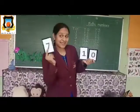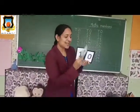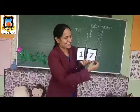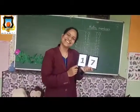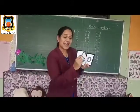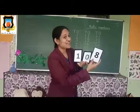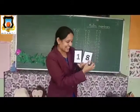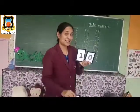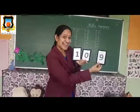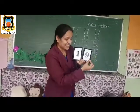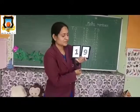Now next — 6 ki baad kya aata hai? 7. So 10 and 7, 17. Say everyone: 10 and 7, 17. Very nice. Now 10 and 8, 18. Say everyone: 10 and 8, 18. Very good. Now the last number is 9. So 10 and 9, 19. Say everyone: 10 and 9, 19.